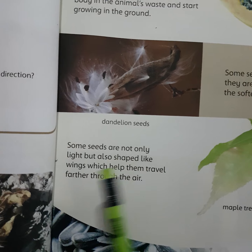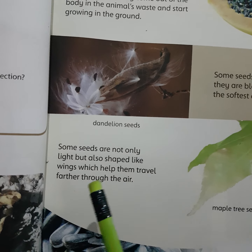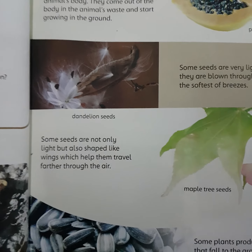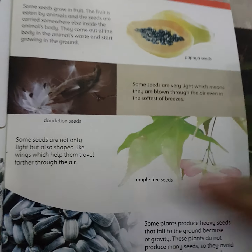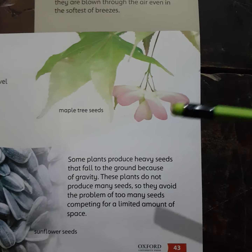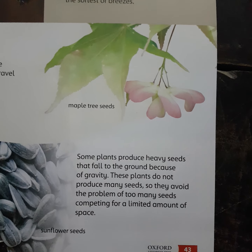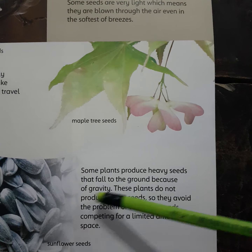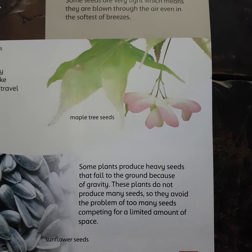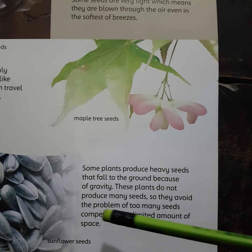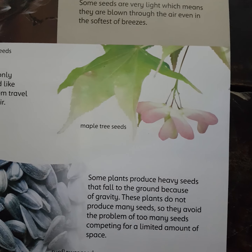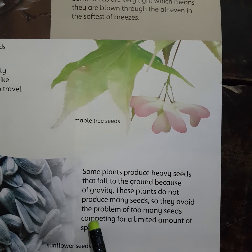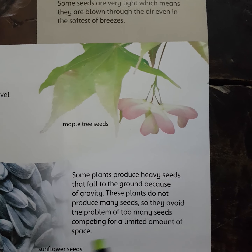Some plants produce heavy seeds. They fall to the ground because of gravity. These plants do not produce many seeds, and they avoid the problem of too many seeds competing for a limited amount of space.